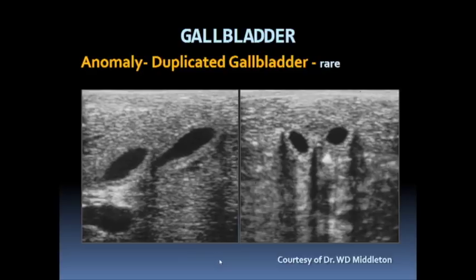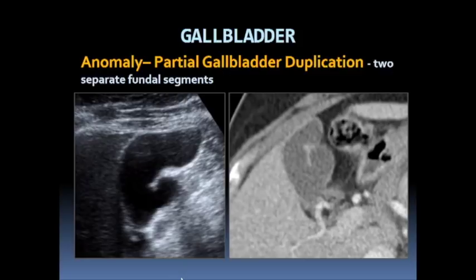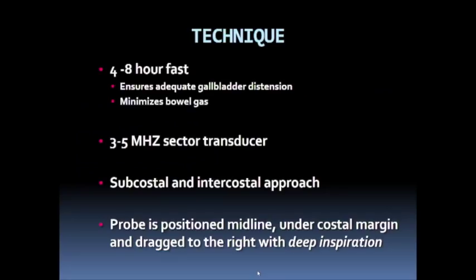Other anomalies include duplication of the gallbladder, which is an extremely rare anomaly. In this patient we see complete duplication of the gallbladder with two structures immediately adjacent to each other on longitudinal and transverse views. Another patient shows partial duplication with two separate fundal segments, illustrated on both ultrasound and correlated CT imaging.